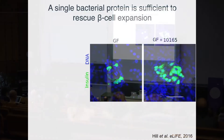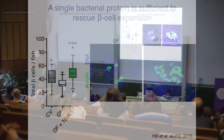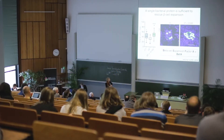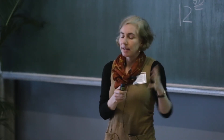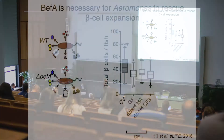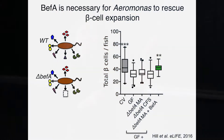This was a novel protein of unknown function. When she purified and expressed that protein and added it to germ-free fish, she was able to restore the beta cell numbers. We went on to name this protein Beta cell Expansion Factor A, or BEF-A, for its capacity to induce beta cell expansion in germ-free animals. We then made a BEF-A mutant Aeromonas. When you mono-associate germ-free fish with the BEF-A mutant or use its cell-free supernatant, they are unable to restore beta cell numbers, and you can rescue that with purified BEF-A protein.